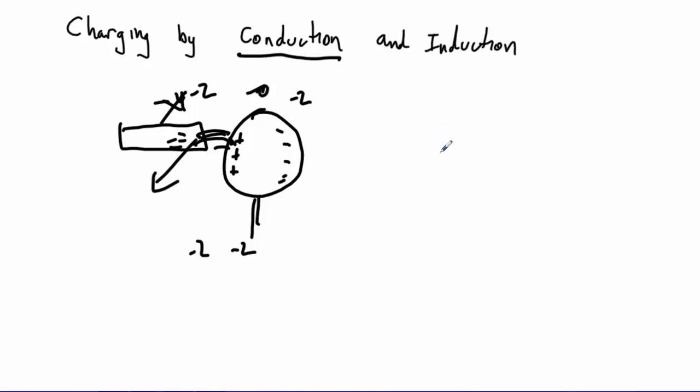If, say you had an object that was neutral to start with, so it has the same amount of pluses and minuses, and you brought up our negatively charged rod to it, what would happen is, you're not touching, but same thing, right, these charges would separate.